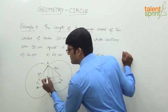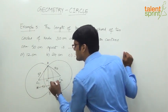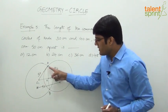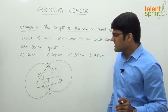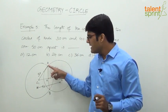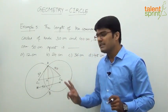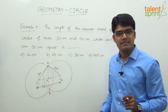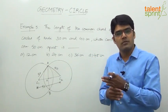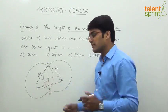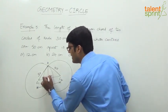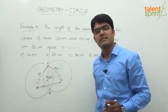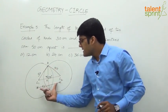Let's call the point of intersection of the common chord with the line joining the centers as X. We need to find the length AB. We'll first find AX and then double it to get the complete length AB. We know that the common chord is always perpendicular to the line joining the two centers, so we have 90 degrees here — giving us two right-angle triangles: triangle AX-C1 and triangle AX-C2.